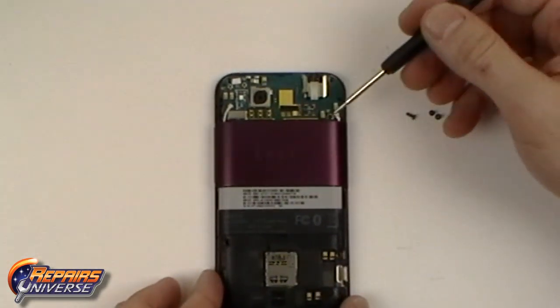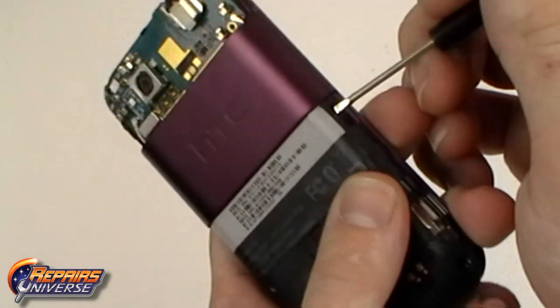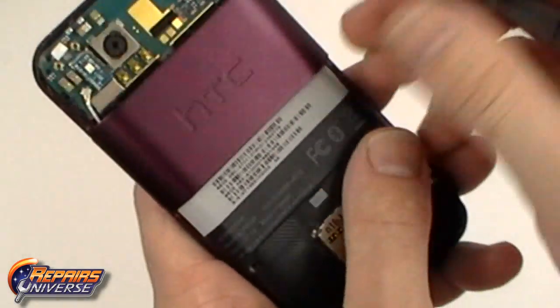There will also be one small Phillips screw that will need to be removed. Using a pry tool, we can now lift away the model decal.